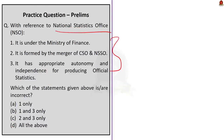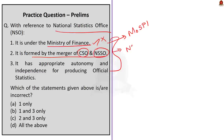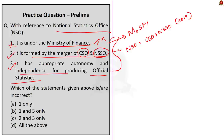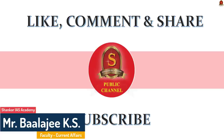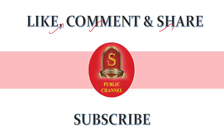The sixth and final prelims question is a three-statement question regarding the National Statistical Office. Statement 1: It is under the Ministry of Finance — this is wrong, as it is under the Ministry of Statistics and Programme Implementation. Statement 2: It is formed by the merger of CSO and NSSO — this is correct; NSO was formed by merger in 2019. Statement 3: It has appropriate autonomy and independence for producing official statistics — this is also correct. Since Statement 1 is wrong and Statements 2 and 3 are correct, the answer is option C: 2 and 3 only. Write the main question answer in the comment section, like and share, and subscribe to Shankar IAS Academy's YouTube channel.